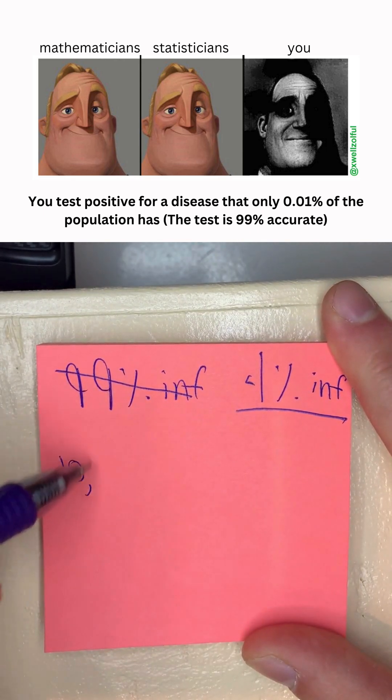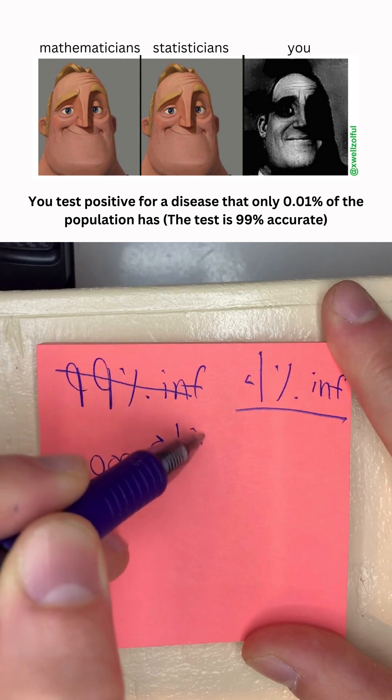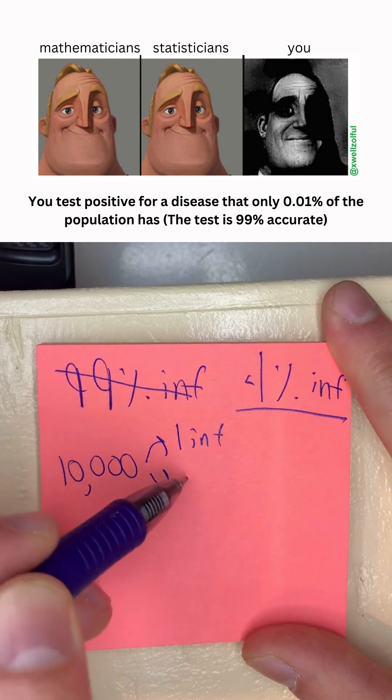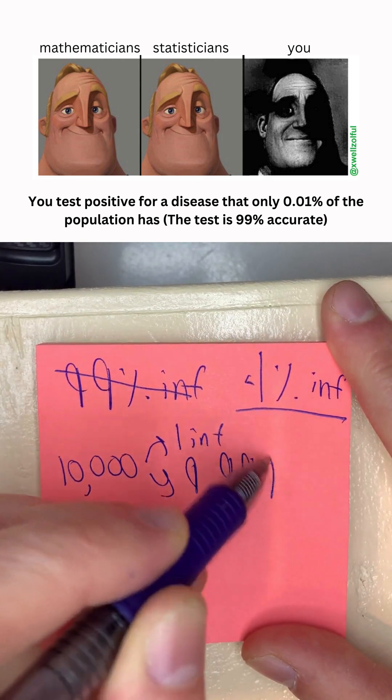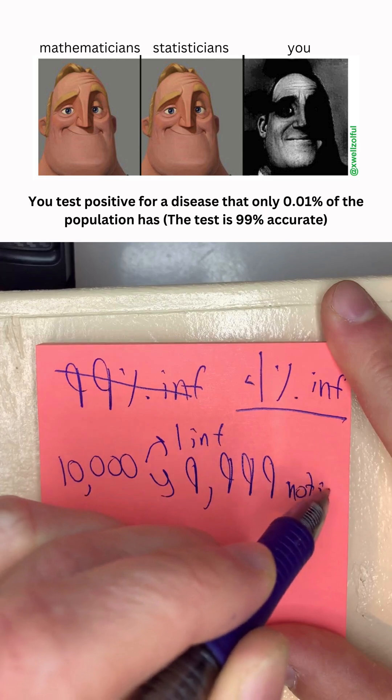You see, if we took a group of 10,000 people, only one of them will actually be infected. The other 9,999 people will not be infected.